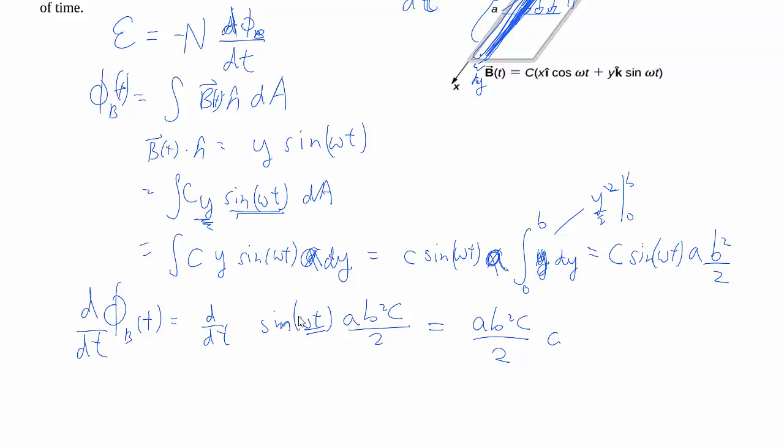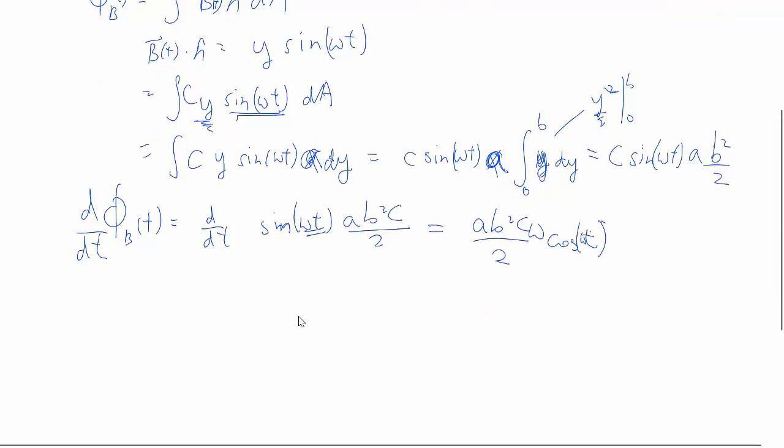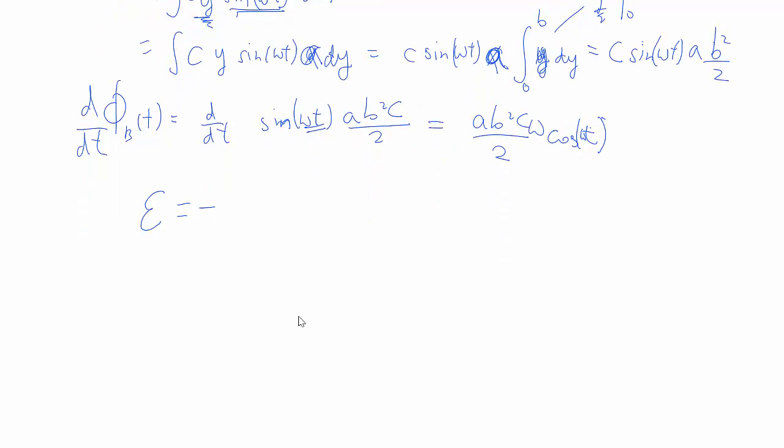Derivative of sine is just simply cosine, omega t, but multiply by omega because of chain rule. And so finally then, the emf is just a negative of this derivative to help signify the direction. And so here's the expression.